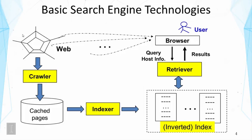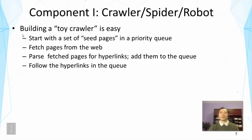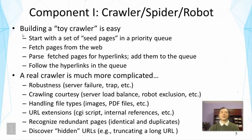We'll talk about each of these components. First, the crawler — also called a spider or software robot — crawls pages on the web. Building a toy crawler is relatively easy: start with a set of seed pages, fetch pages from the web, parse them to find new links, add those to a priority queue, and explore the additional links. But building a real crawler is tricky and involves complicated issues.